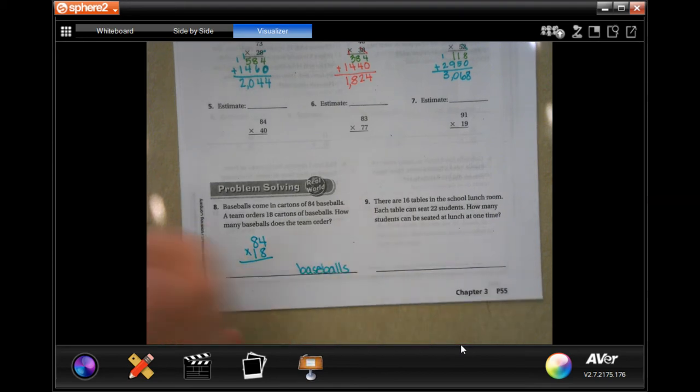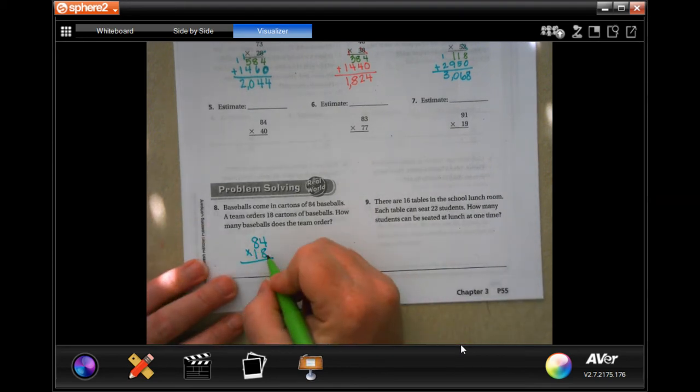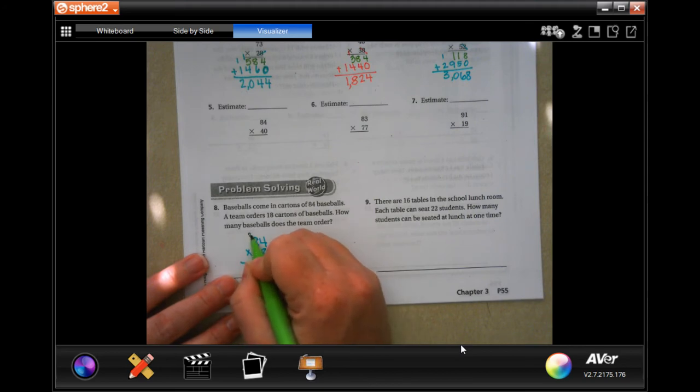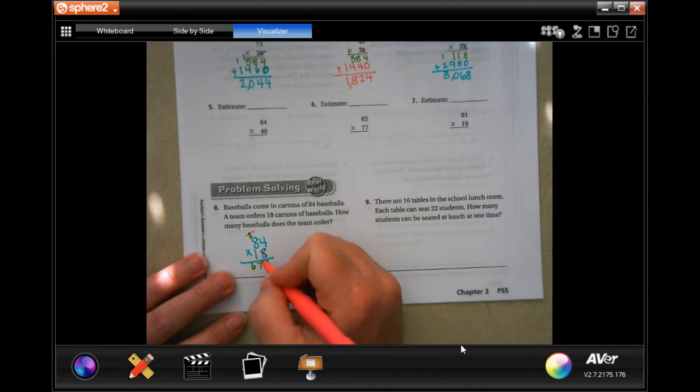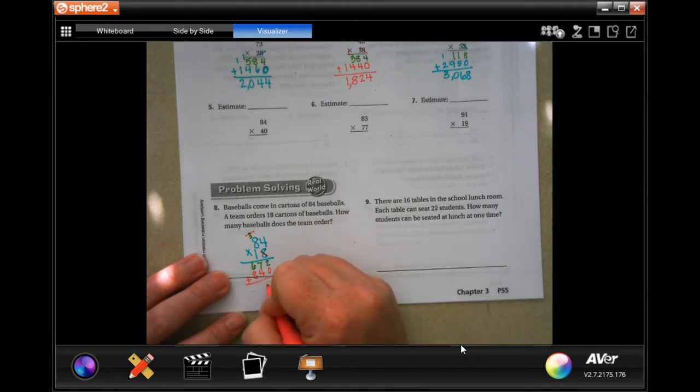Word problem, word answer, guys. So 8 times 4 is 32, carry our 3. 8 times 8 is 64, plus 3 is 67. Tic-tac-toe, and then 1 times 84 is going to be 84. Add them up. 2, 11 carry our 1, 14, and 15. So 1,512 baseballs.